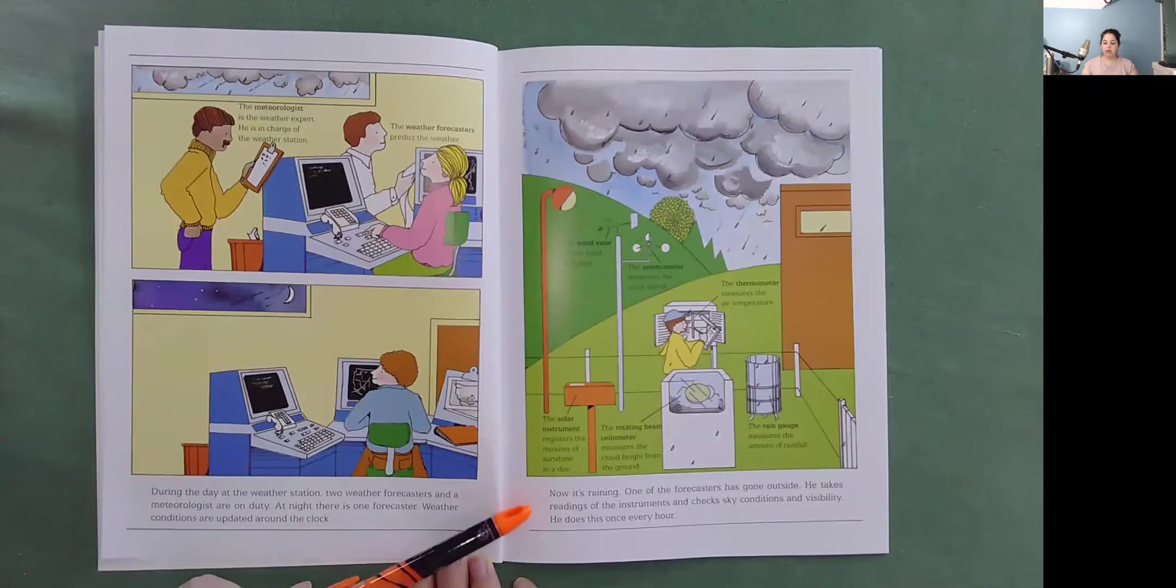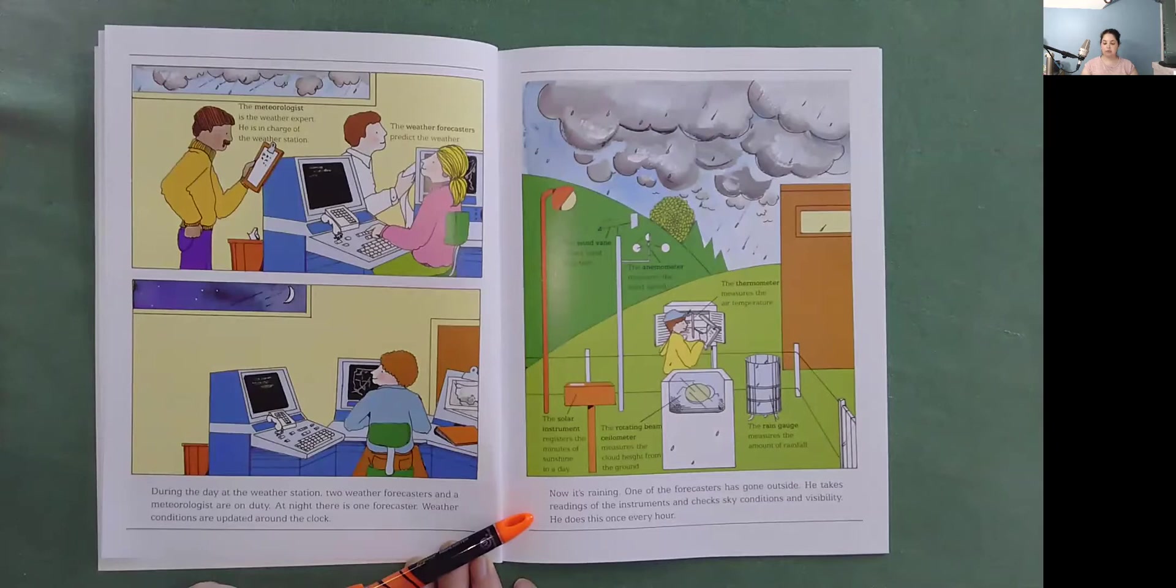Now it's raining. One of the forecasters has gone outside. He takes readings of the instruments and checks sky conditions and visibility. He does this once every hour.